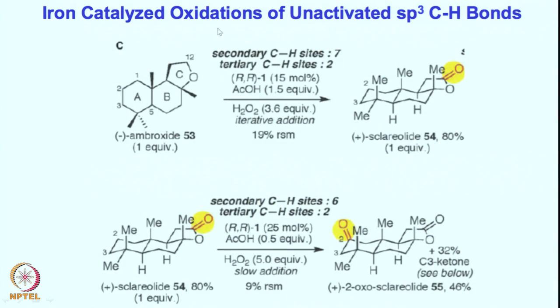Now we would like to see whether for natural products or their analogues — complicated molecules — we can predict the selectivity. For instance, in this molecule we have different types of carbon-hydrogen bonds: several primary, several secondary, and tertiary centers.